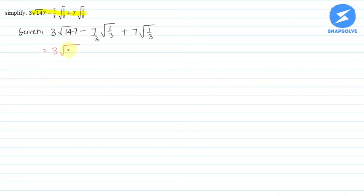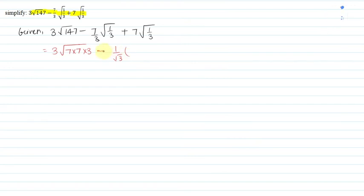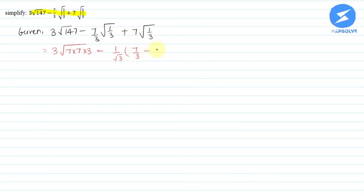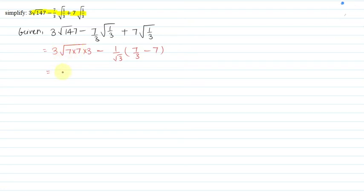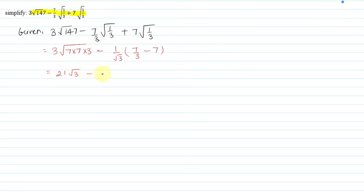We can write 147 as 7 into 7 into 3, minus 7 into 3. We can write 1 by root 3 common. If we take root 3 common, then we can write 7 by 3. This gives us 7 into root 3, minus root 3.